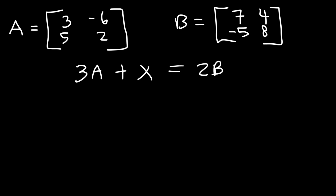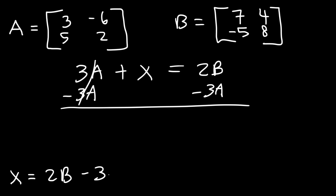So X represents a matrix, and we need to calculate the value of this matrix. The first thing we need to do is solve for X in this equation, and we can do that if we subtract both sides by 3A. So matrix X is going to be 2B minus 3A. So all we need to do is perform the operations on matrices B and A according to that equation, and that will give us matrix X.